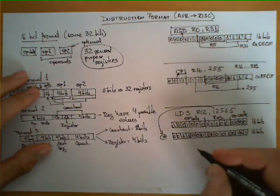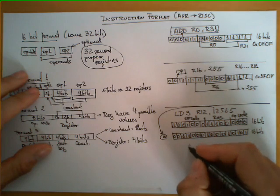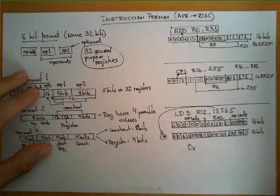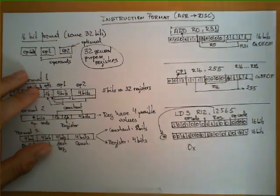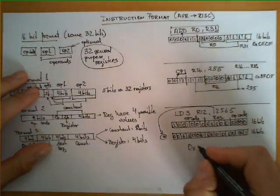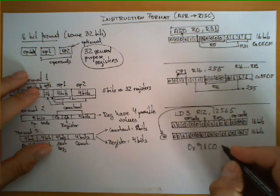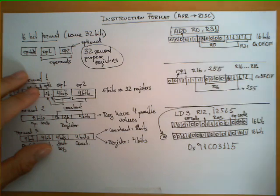In this case, the instruction occupies 4 bytes in memory rather than 2 bytes like the previous instructions. The hexadecimal representation is 0x91C03115.